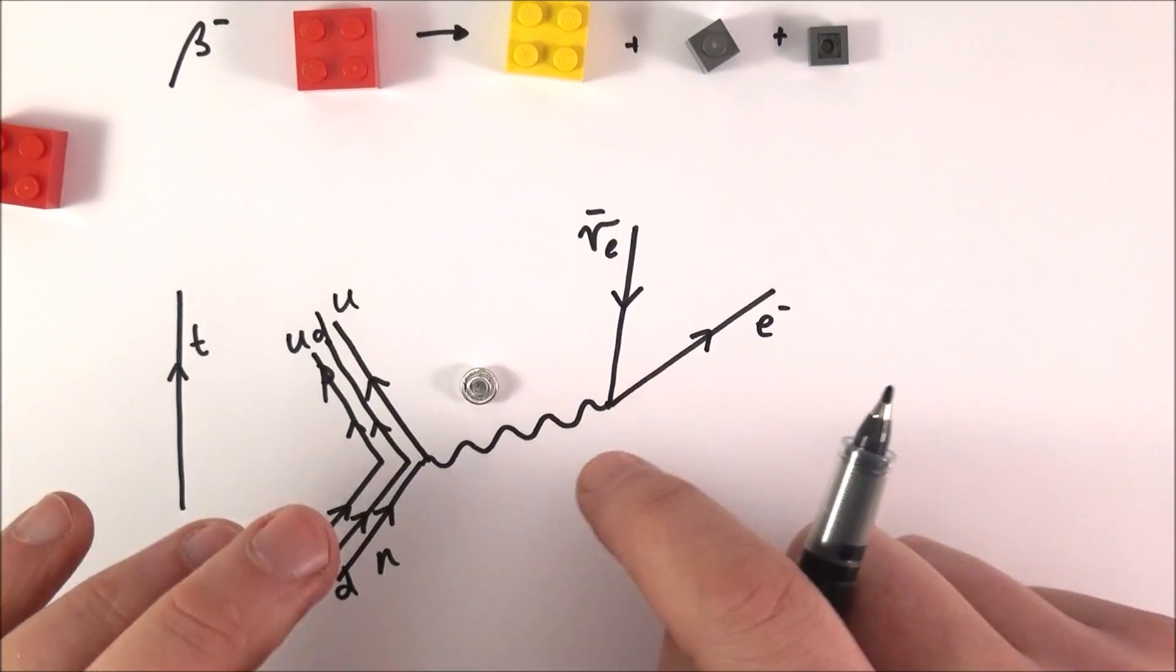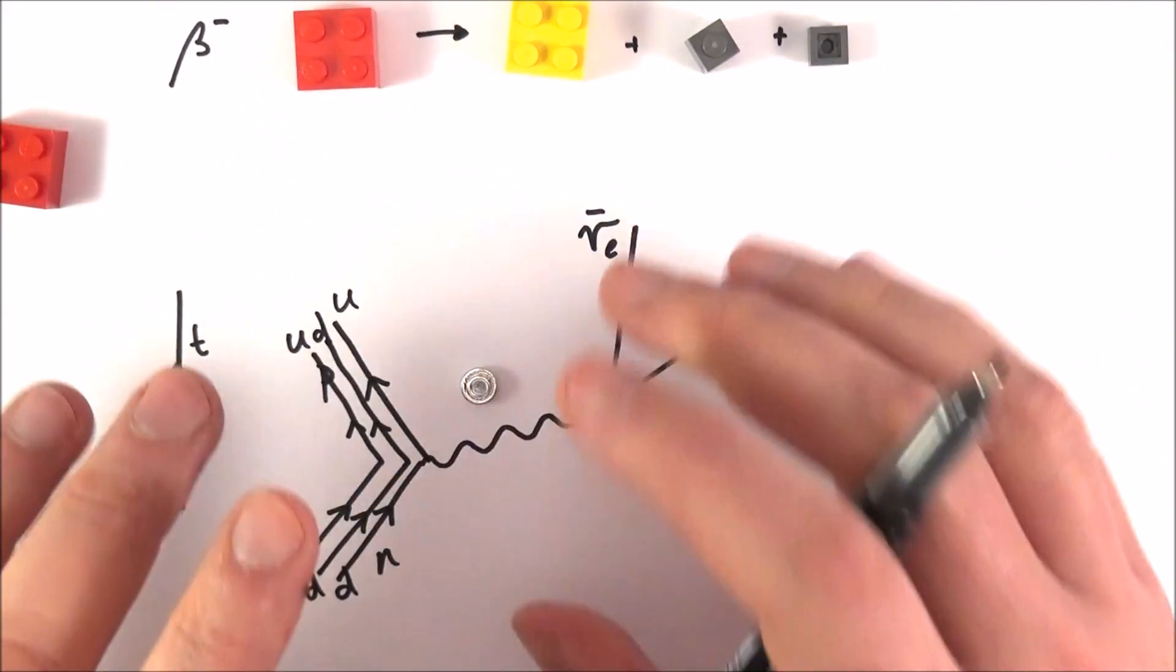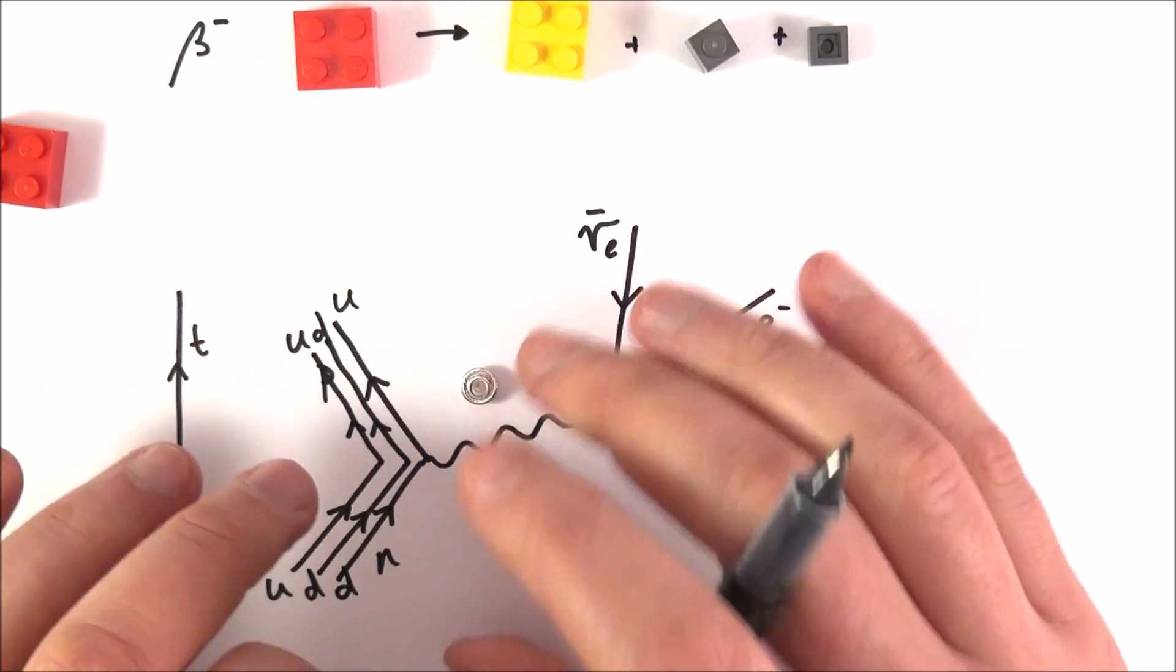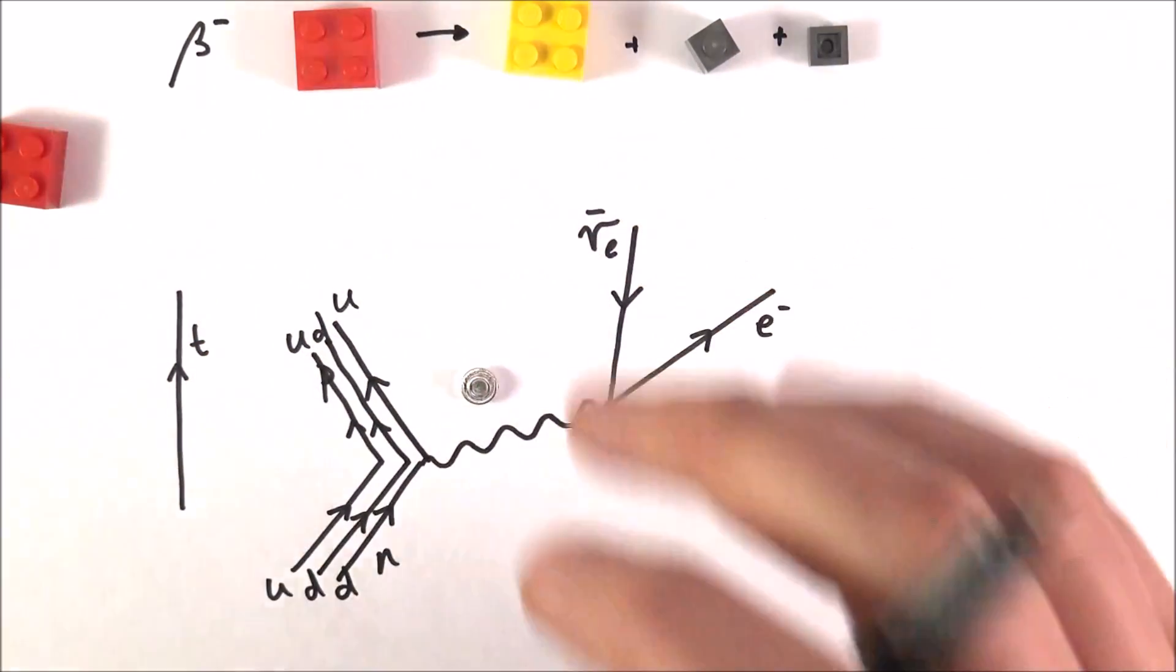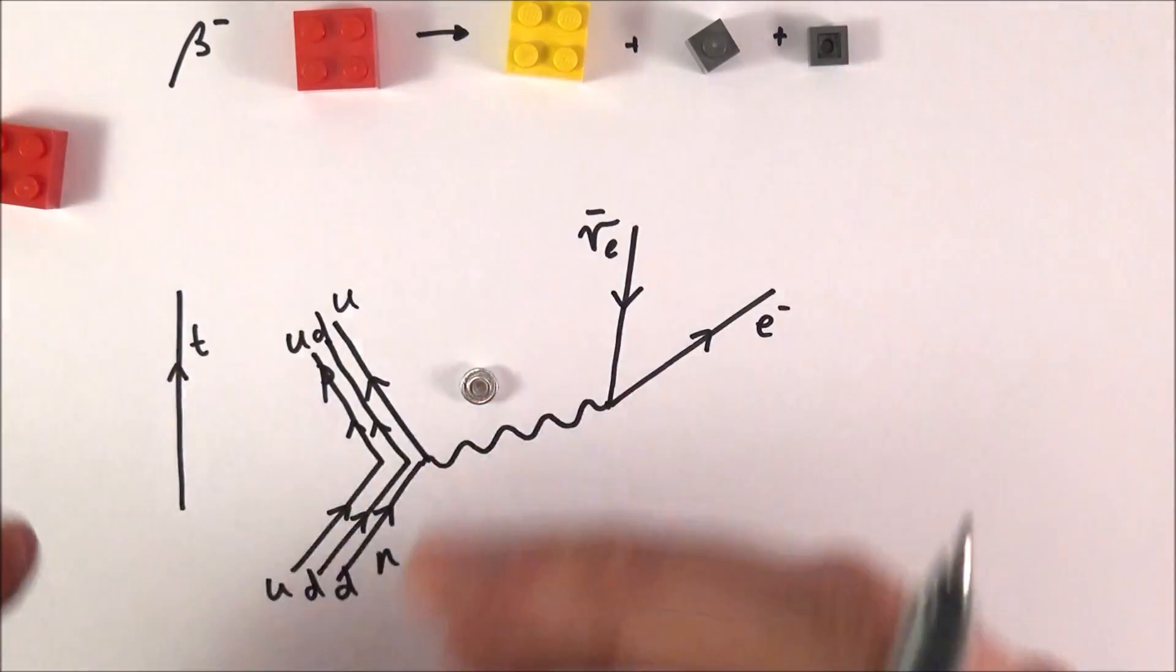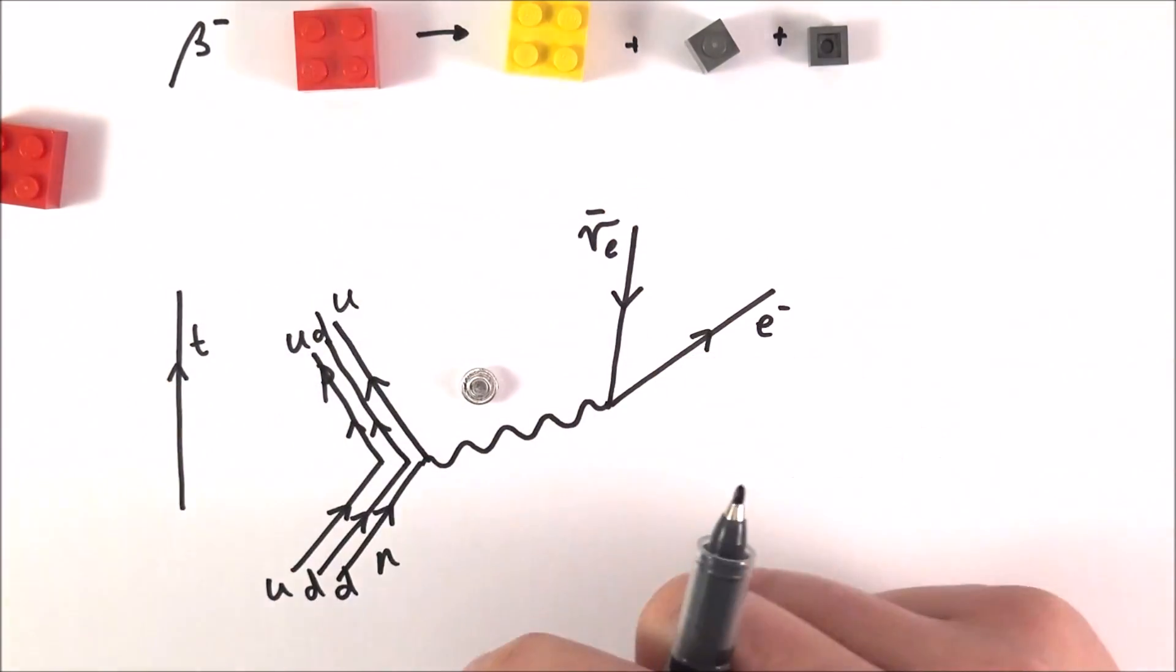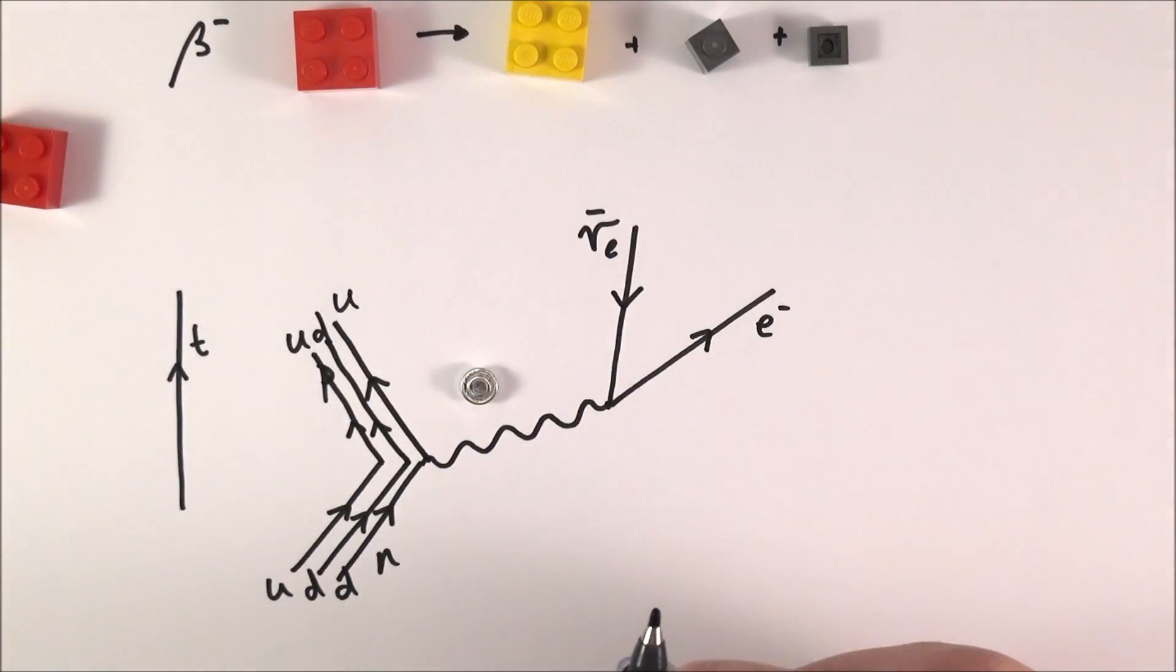And these Feynman diagrams do get really complicated. So have a look on Wikipedia, have a look on the internet, and at university level this goes crazy. But I do think in many ways it does kind of show you quite nicely what's happening with these particle interactions. Thank you.